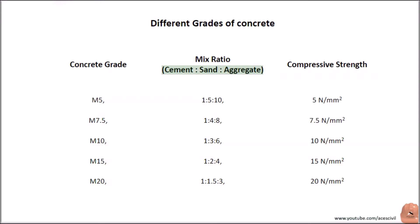Different grades of concrete with their mix ratios (cement:sand:aggregate) and compressive strength: M5 is 1:5:10 at 5 N/mm²; M7.5 is 1:4:8 at 7.5 N/mm²; M10 is 1:3:6 at 10 N/mm²; M15 is 1:2:4 at 15 N/mm²; M20 is 1:1.5:3 at 20 N/mm².